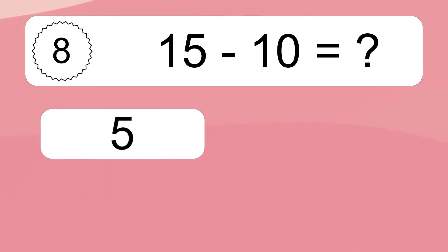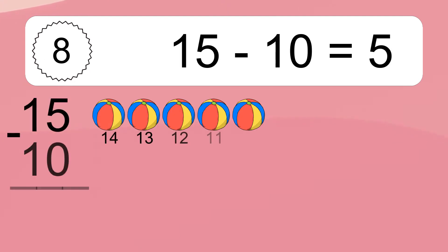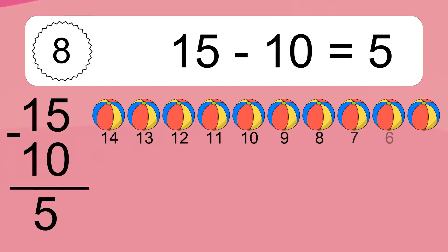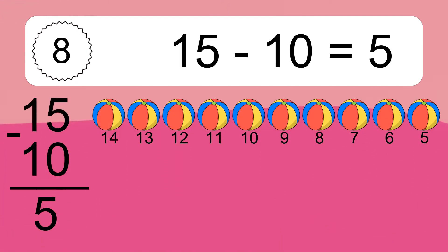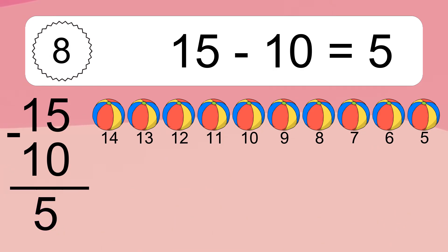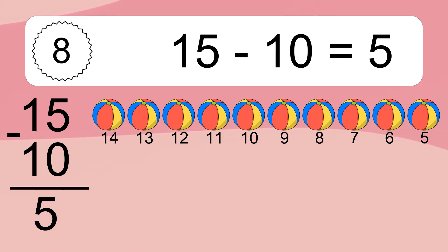15 minus 10 equals what? 15 minus 10 equals 5. Let's count it: 14, 13, 12, 11, 10, 9, 8, 7, 6, 5.